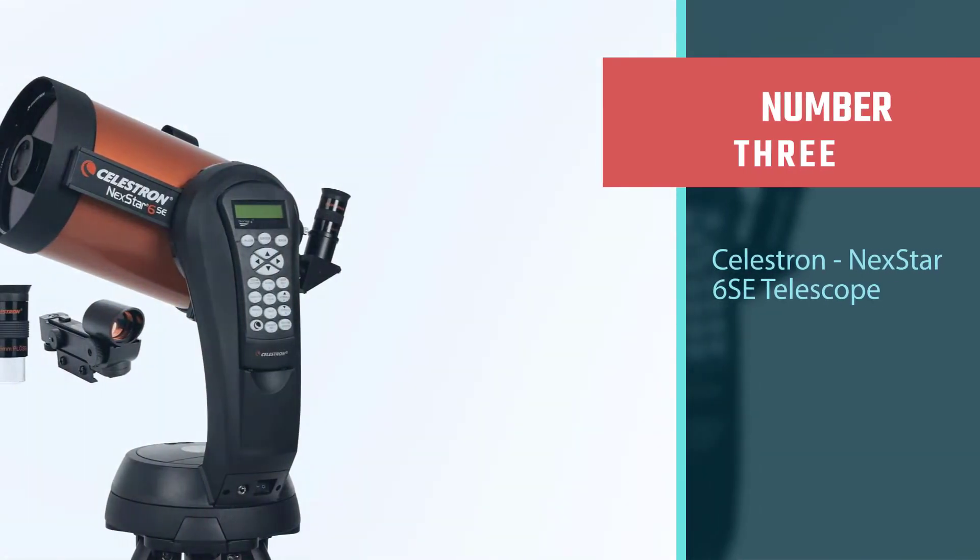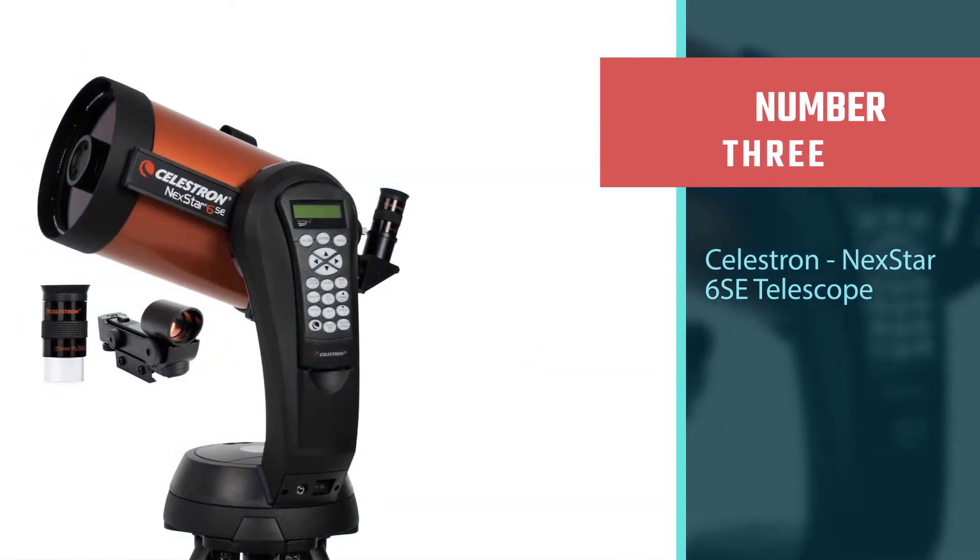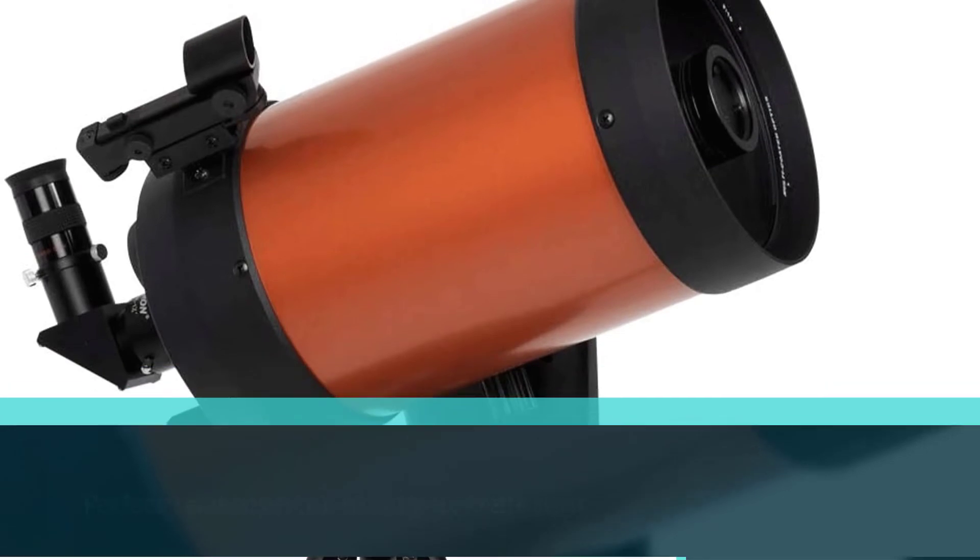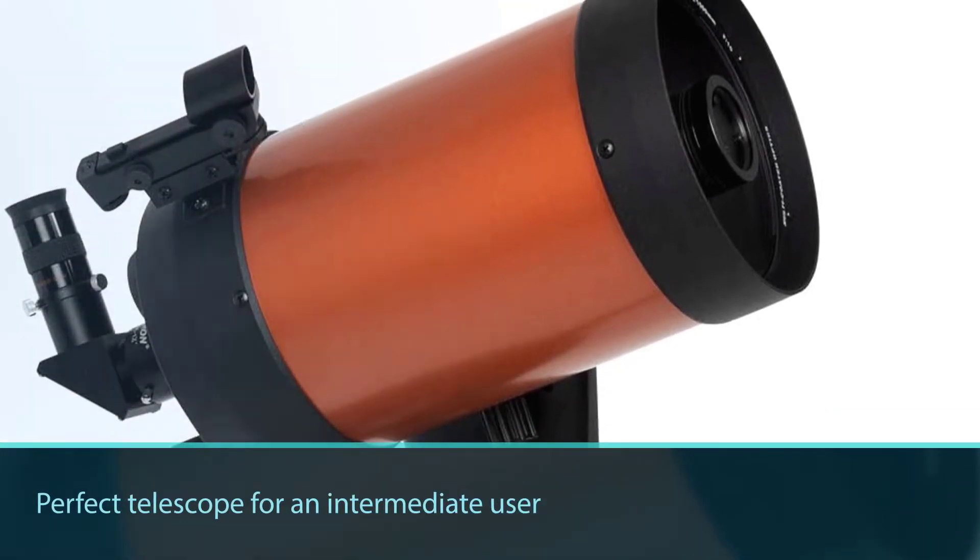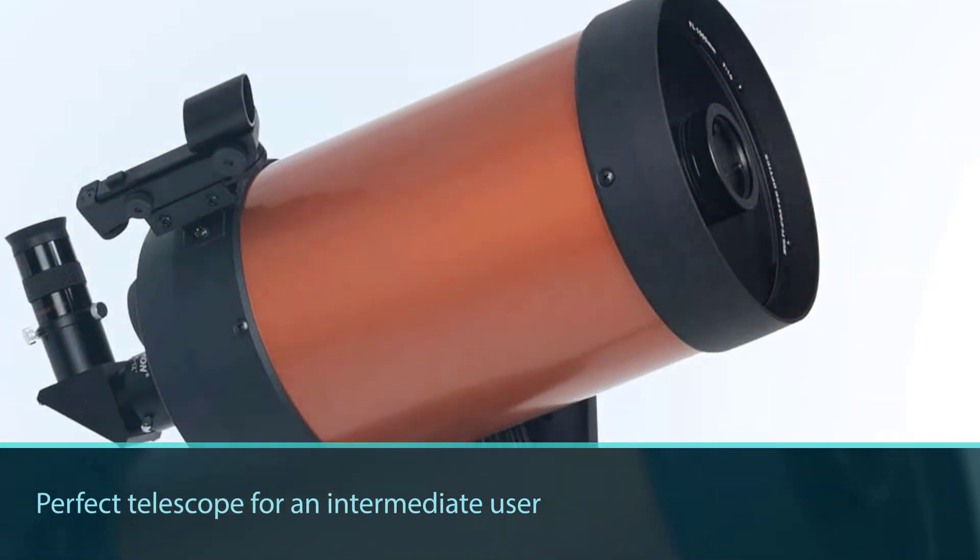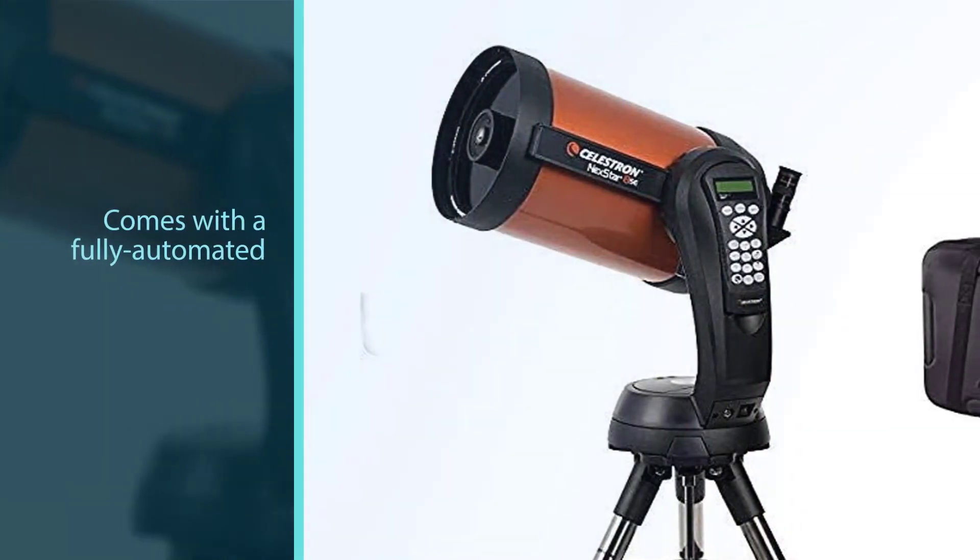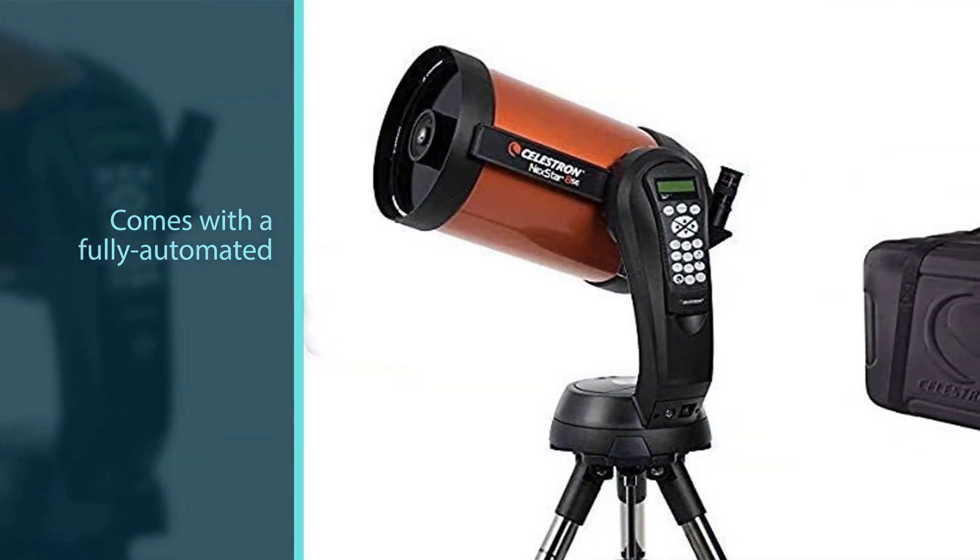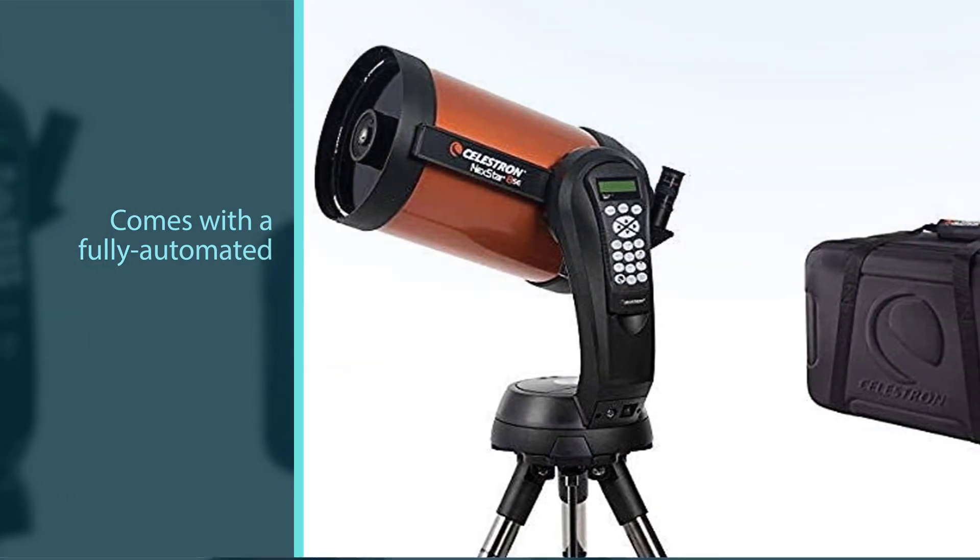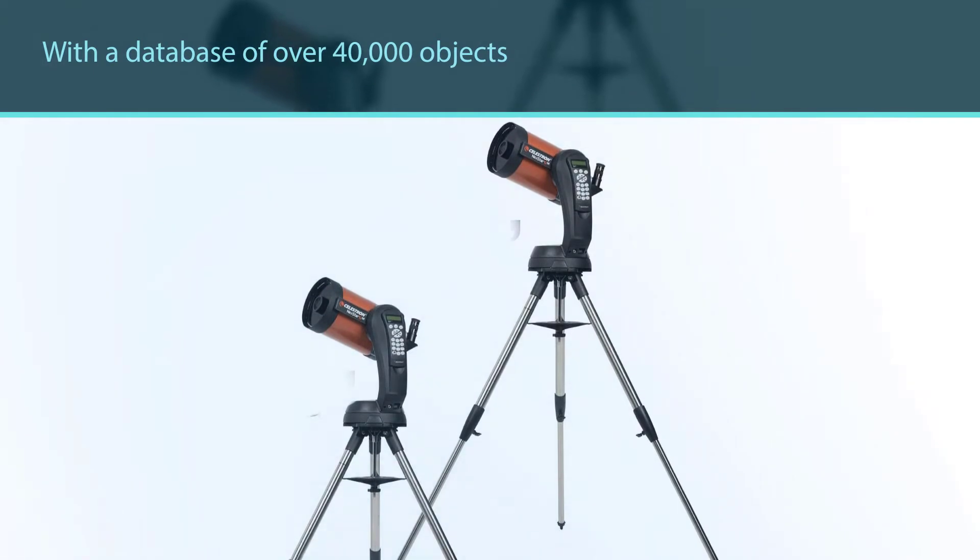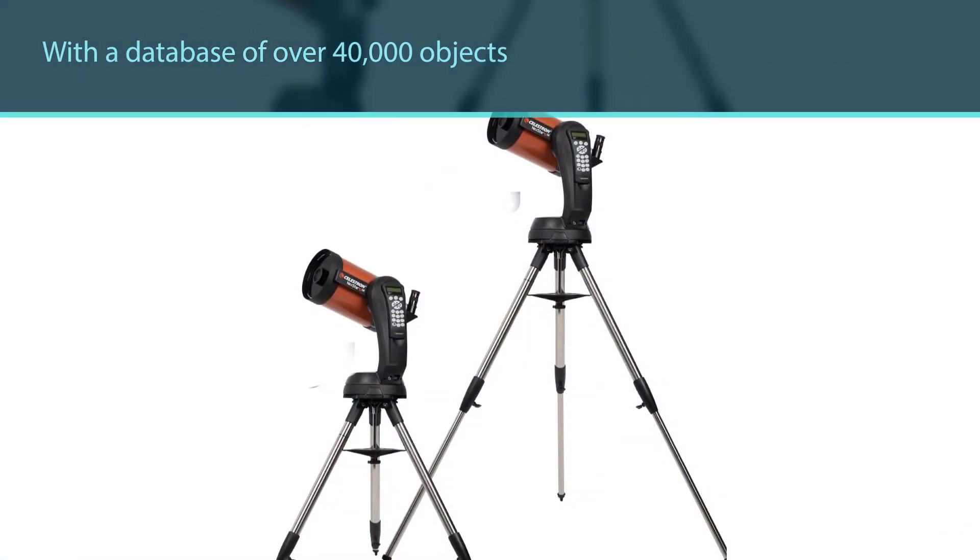Number three: Celestron NexStar 6 SE telescope. While it is advertised for both beginners and advanced users, it's the perfect telescope for an intermediate user. It comes with a fully automated GoTo motorized mount with a database of over 40,000 objects. The 150 millimeters aperture provides enough light collection for incredible viewing within our solar system, but it's not the greatest for viewing DSOs.